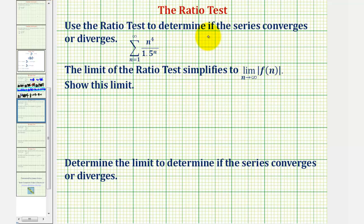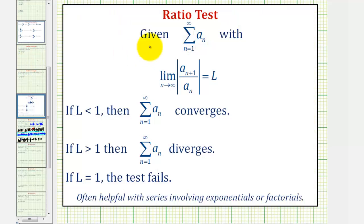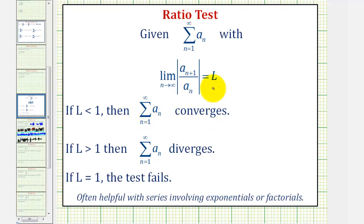We want to use the ratio test to determine if the series converges or diverges. To apply the ratio test, if we have the summation of a_n with the limit as n approaches infinity of the absolute value of a_{n+1} divided by a_n equals L, then if L is less than one, the infinite series converges. If L is greater than one, the infinite series diverges. And if L equals one, the test fails and we have to apply a different test.